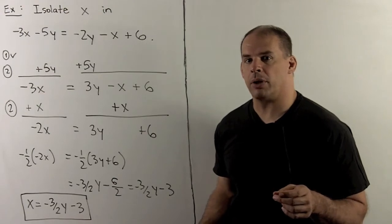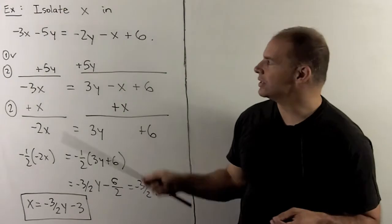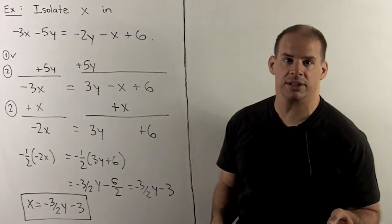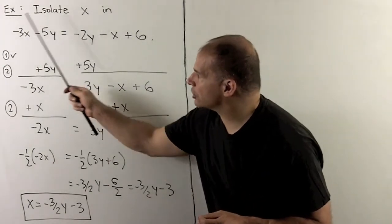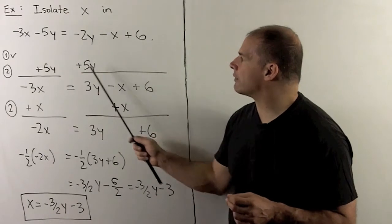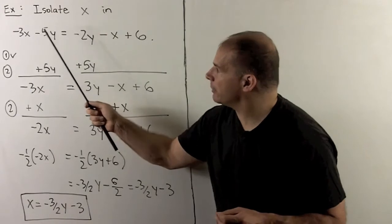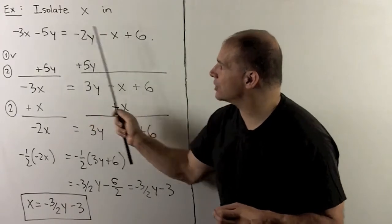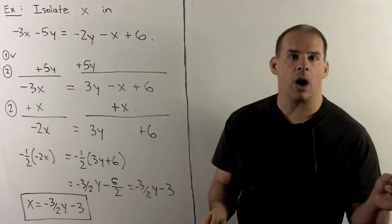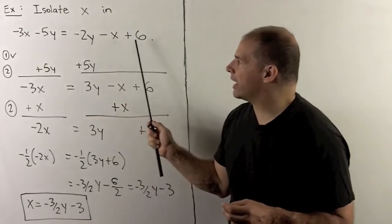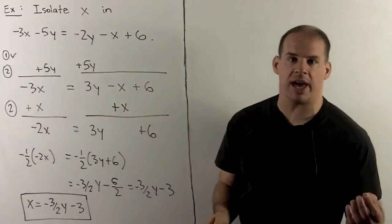For a last example, let's isolate x in the equation -3x - 5y = -2y - x + 6. The variable is x, so I want to push all x terms to the left-hand side and all non-x terms to the right-hand side. Looking at the equation, there's nothing to combine, so we can't simplify. We move to step two: push minus 5y to the right-hand side as plus 5y, and minus x goes to the left-hand side as plus x.